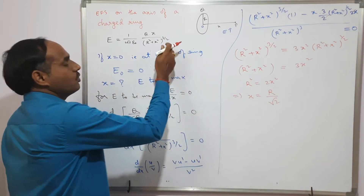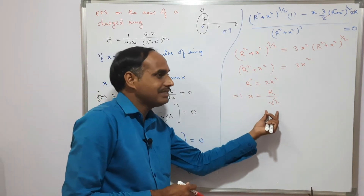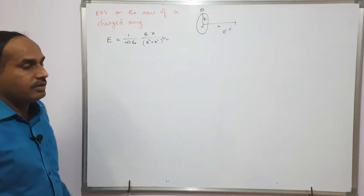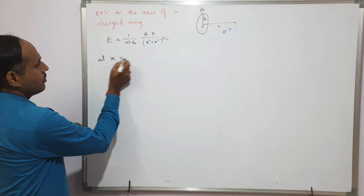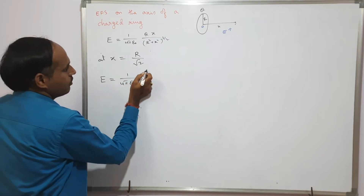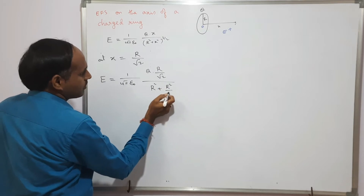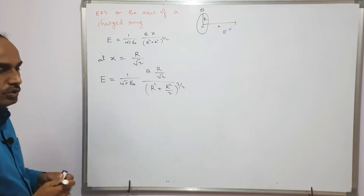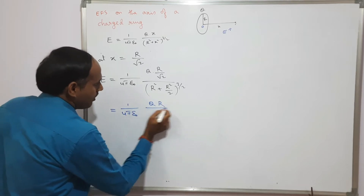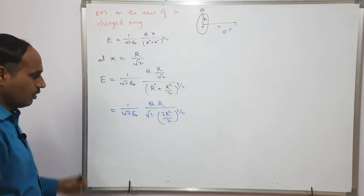Now we find the value of E_max by substituting x = r/√2 into the formula. E equals (1/4πε) times q times (r/√2) divided by (r² + r²/2)^(3/2). This gives (1/4πε) times qr/√2 divided by (3r²/2)^(3/2).